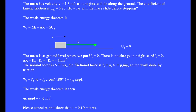The frictional force, which is always mu k times the normal force, equals mu k mg. The work done by friction is the dot product of the frictional force vector and the displacement vector. The frictional force points to the left and the displacement points to the right. The angle between those two vectors when placed tail to tail is 180 degrees. Cosine of 180 equals minus one, and the work done by friction equals minus mu k mgd.